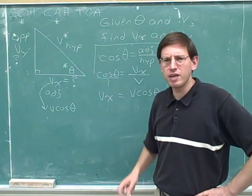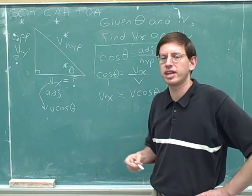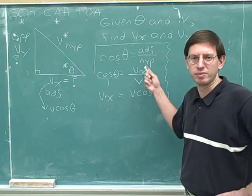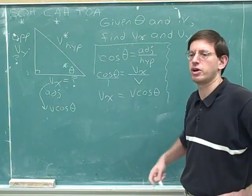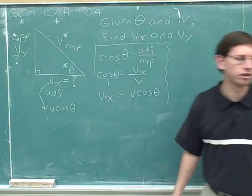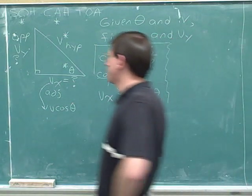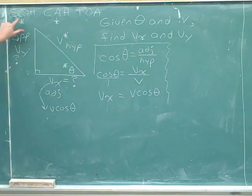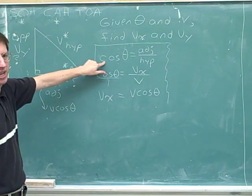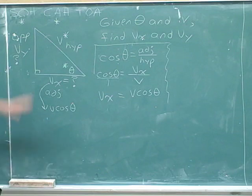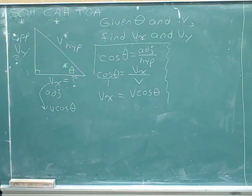If you were not able to do this problem on your own, maybe now you're starting to get the hang of it. You might want to pause the video and try to finish the problem now on your own. Remember that we had planned to use both the cosine and the sine functions — we've accomplished the cosine half. It's helpful to write down your SOHCAHTOA mnemonic and use asterisks to indicate which functions you're planning to use.